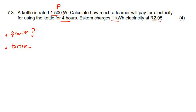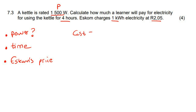You also need to know what Eskom is charging for electricity. If they make the price more expensive, you pay more; if cheaper, you pay less. So we need to know Eskom's price. To work out the total cost, you're literally just going to find all of those things and multiply them all together.